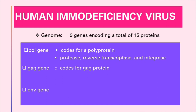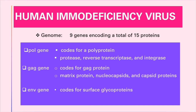The gag gene codes for a gag protein — that's the matrix protein (M protein), the nucleocapsid proteins, and capsid proteins. The env gene codes for surface glycoproteins, particularly glycoprotein 120 (gp120) and glycoprotein 41 (gp41). You need to track this glycoprotein 120 because it's very important.